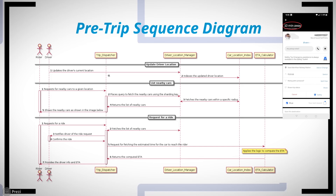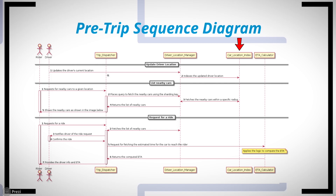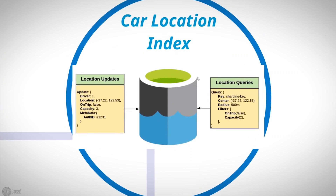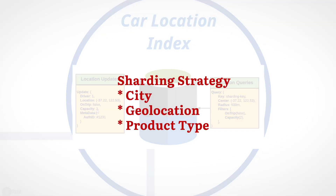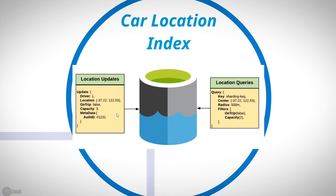Let's explore how the Car Location Index supports the high volume of reads and writes from both riders and drivers. It's a distributed cache with car locations stored in memory. The key challenge is selecting the right sharding strategy to avoid hot partitions. We can shard by city, geolocation, and even by product — for example, UberX has a separate shard from Uber Black. Storing in memory keeps queries very fast, since you don't want Bob waiting to find a ride.